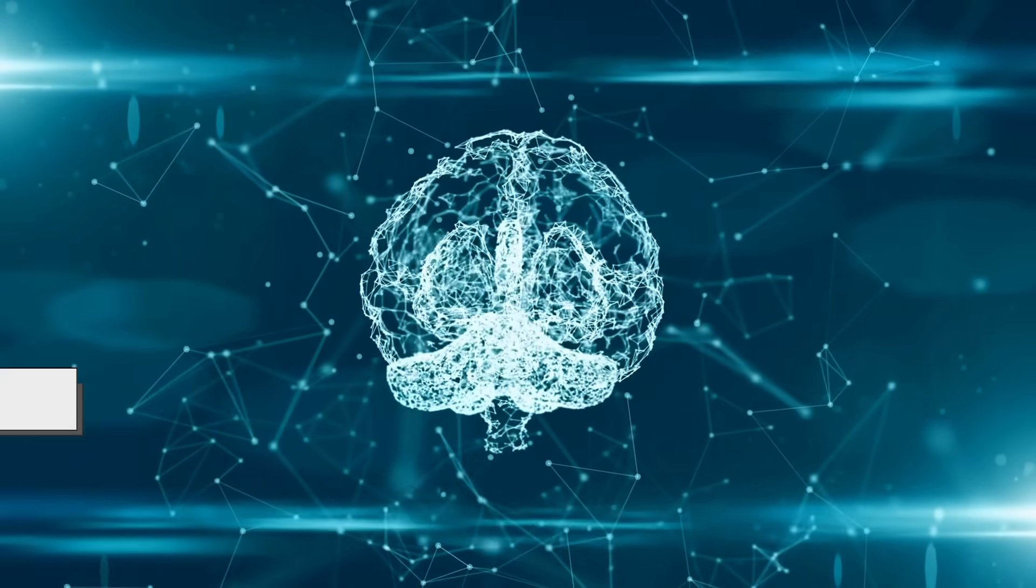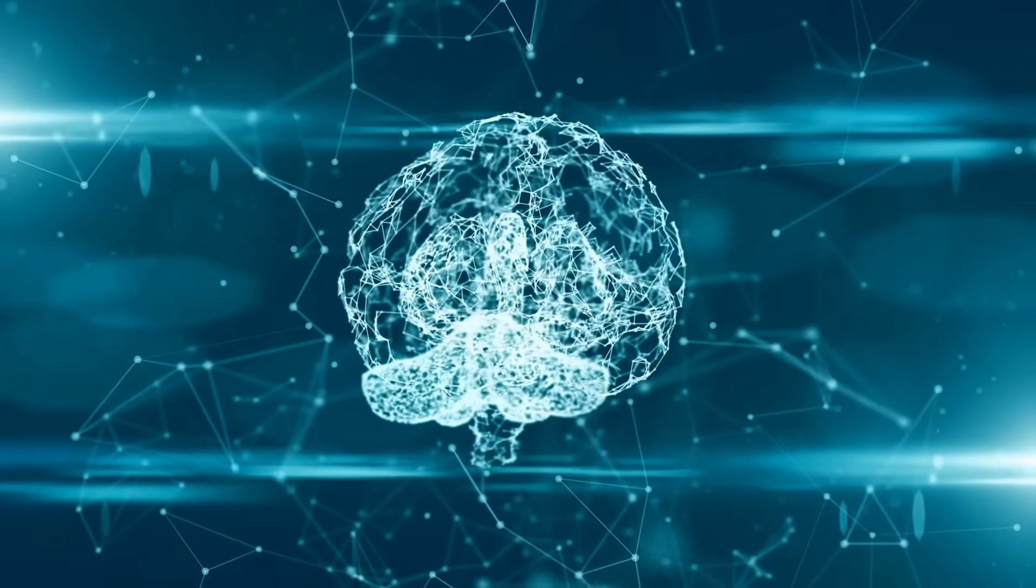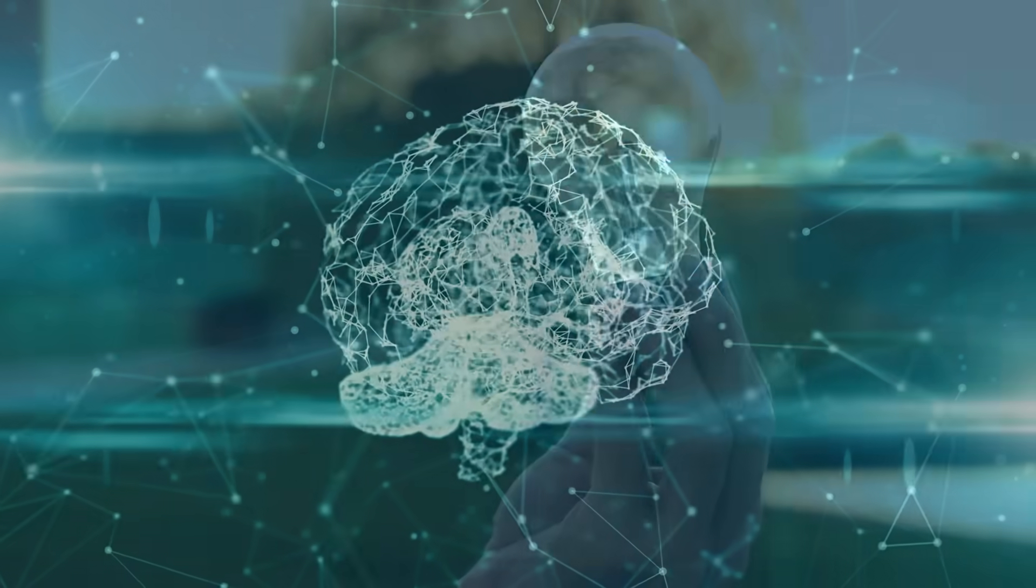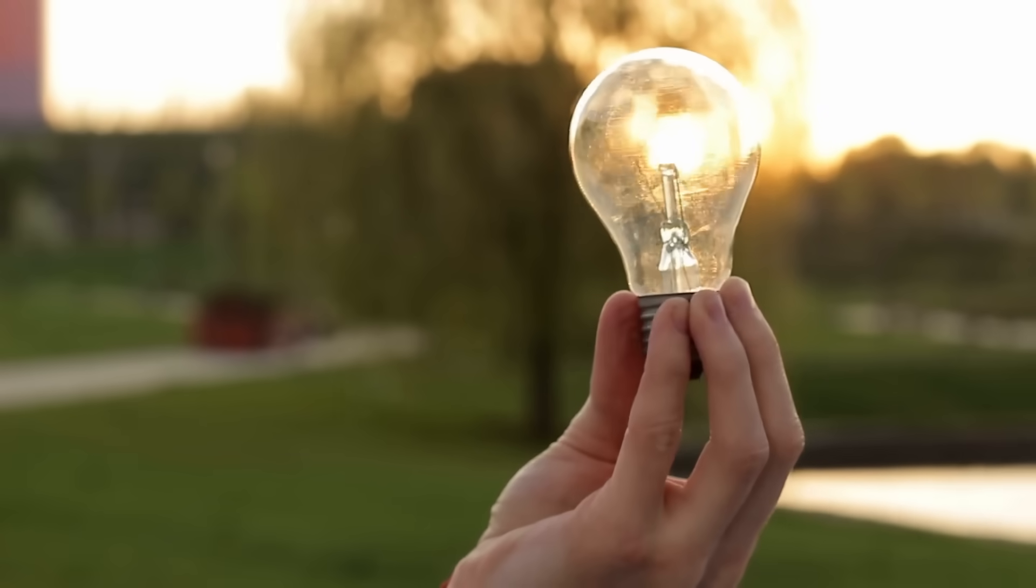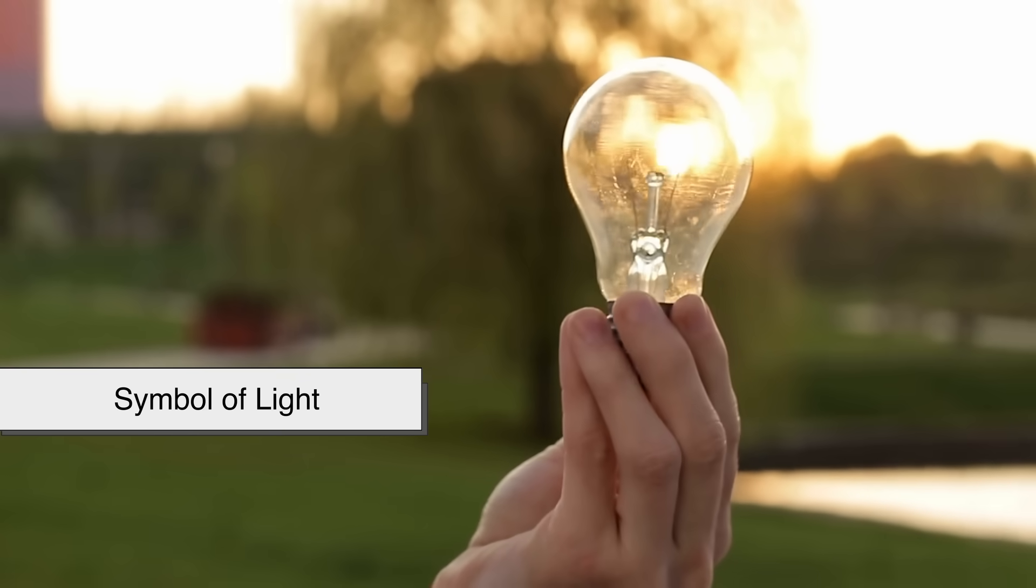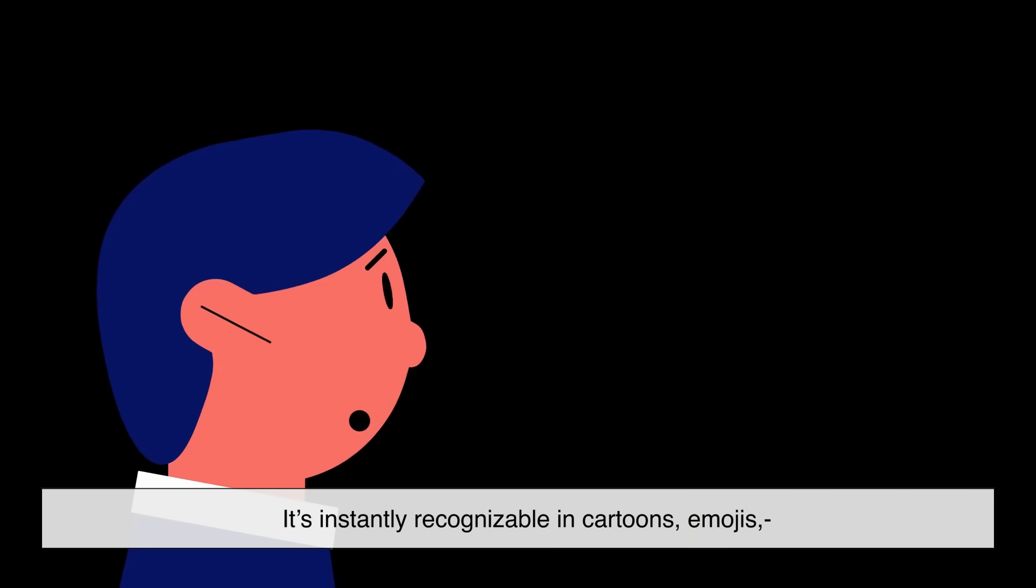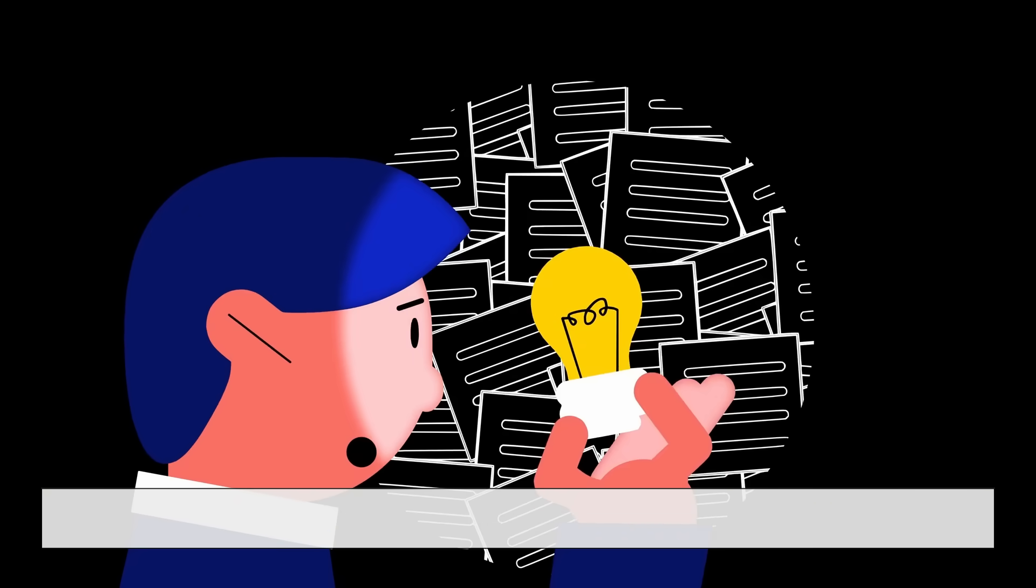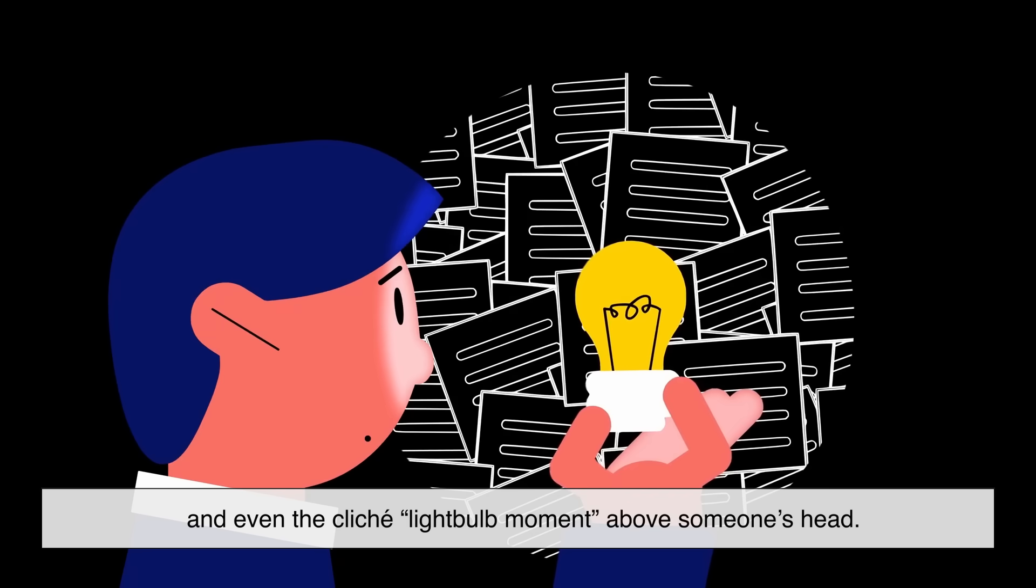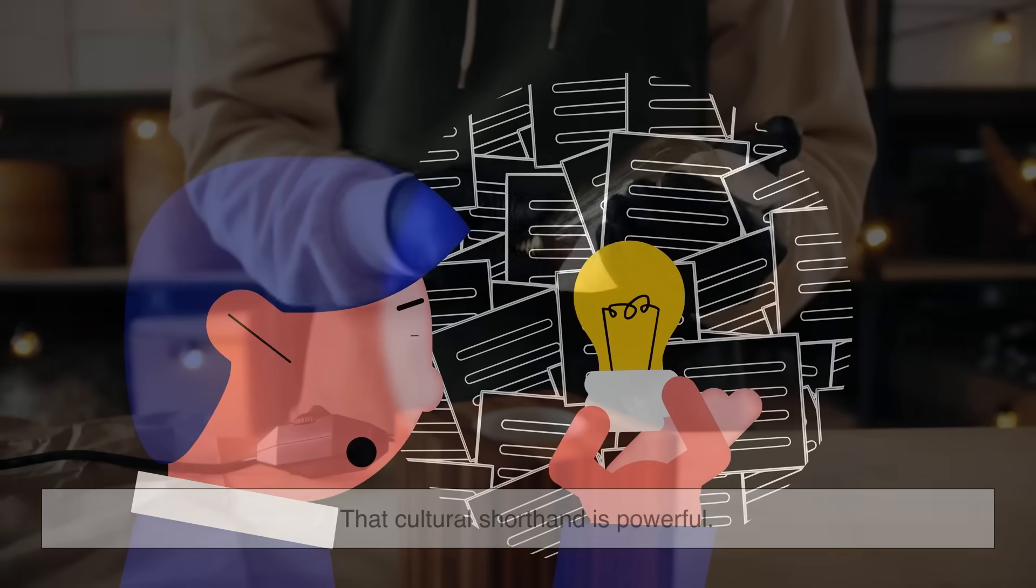And there's a good reason for that: psychology. Humans love familiarity. Over the decades, the pear-shaped bulb became the universal symbol of light. It's instantly recognizable in cartoons, emojis, and even the cliche light bulb moment above someone's head.